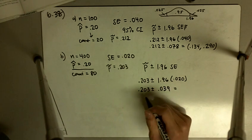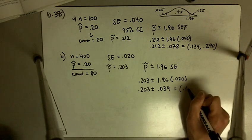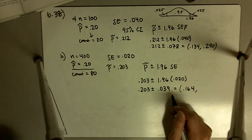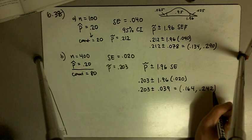And so 0.203 minus 0.039 gives me 0.164, and 0.203 plus 0.039 gives me 0.242.